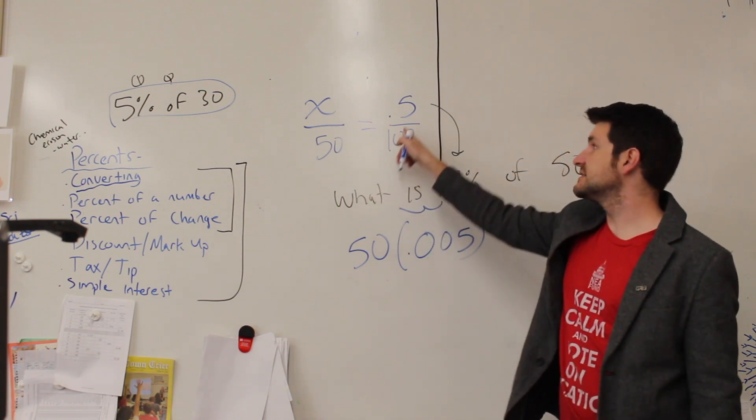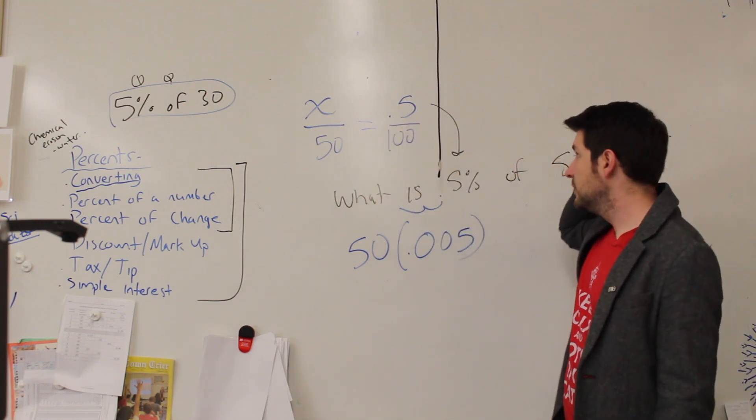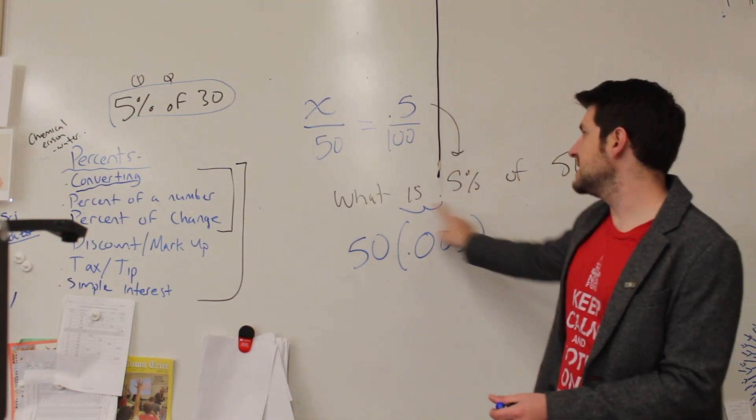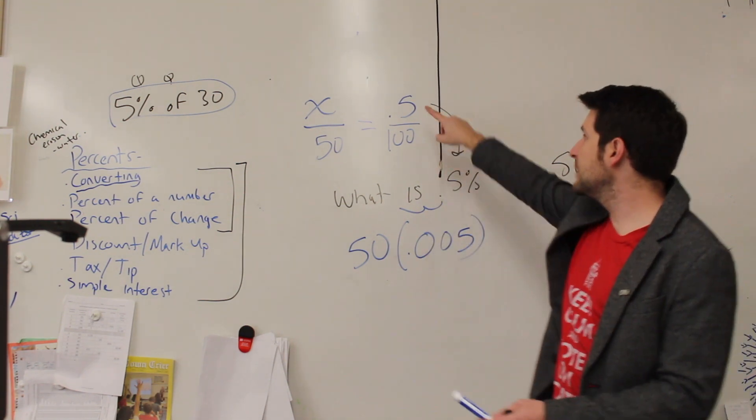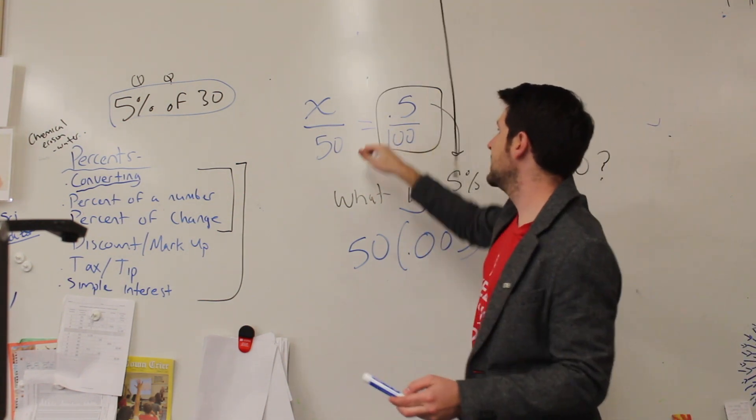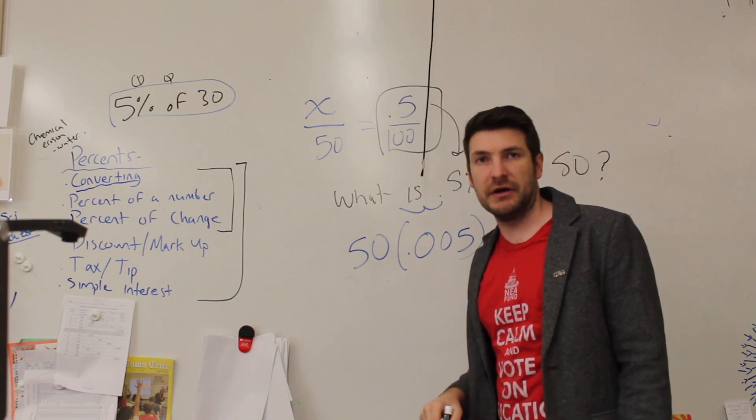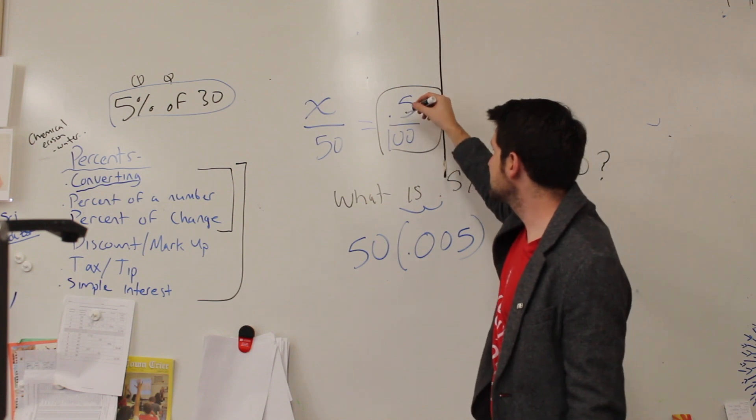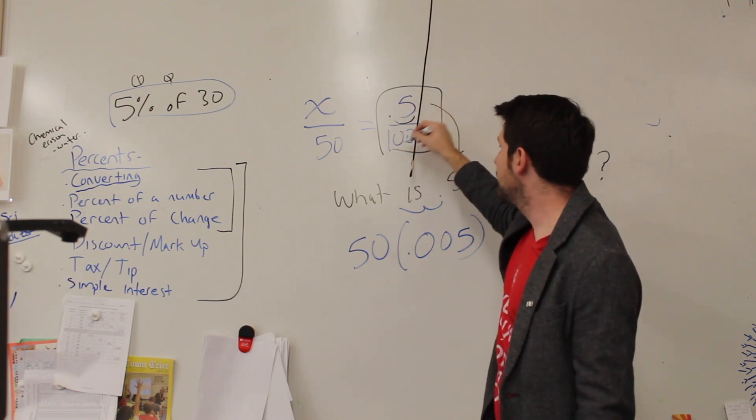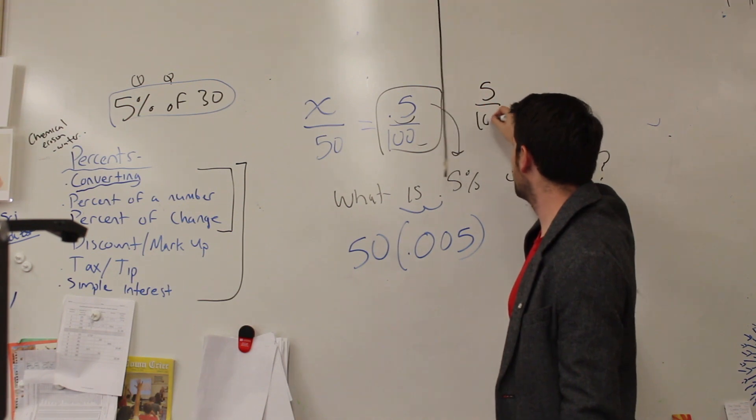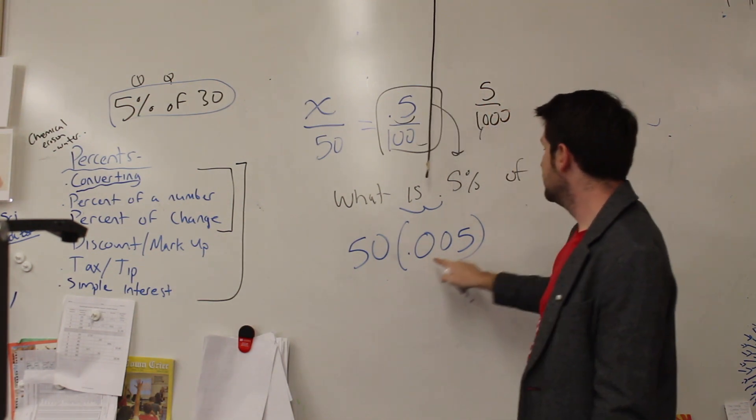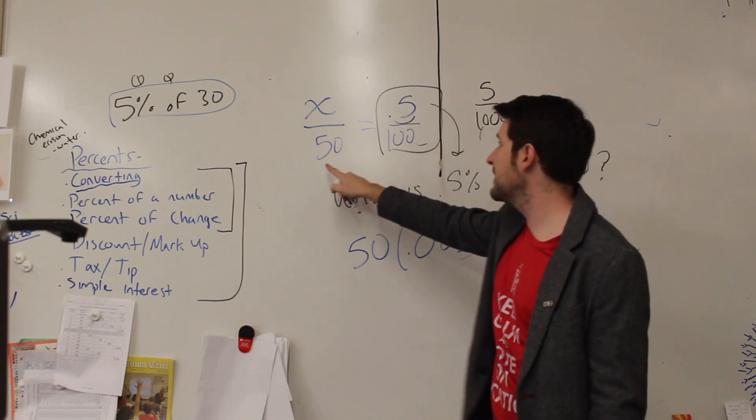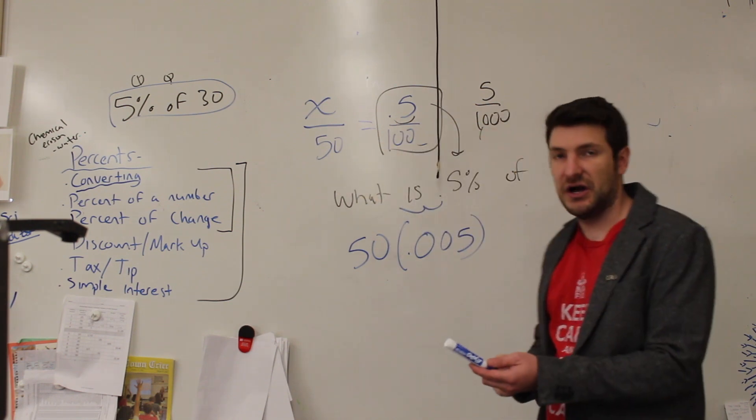This is the same thing as this guy right here. Because, see this guy right here, this decimal? If we were to take this fraction and convert it to a decimal, what do you think we'd end up with? You're right. We end up with this guy right here. We move our decimal over once, move our decimal over once, 5 over 1,000. This is 5,000. Multiply that by 50 and you'll get our answer of x.